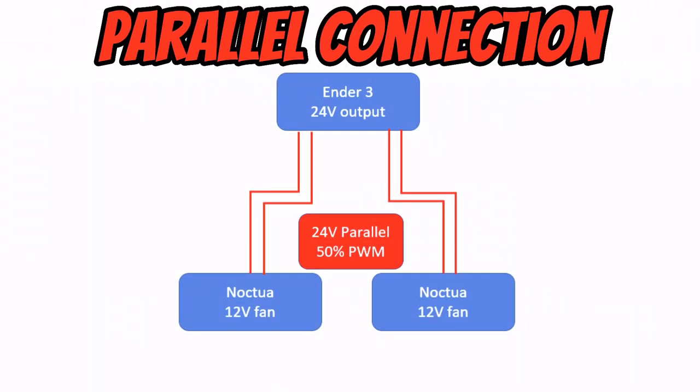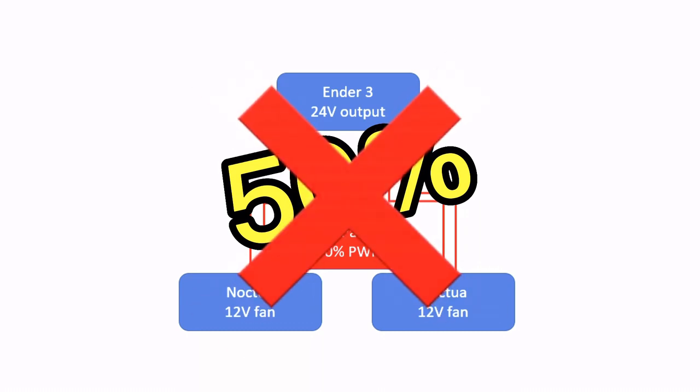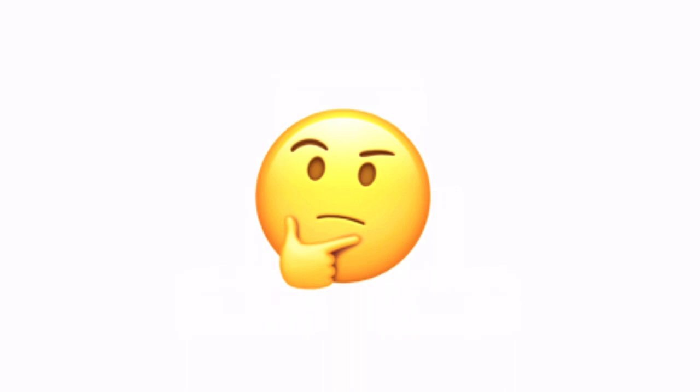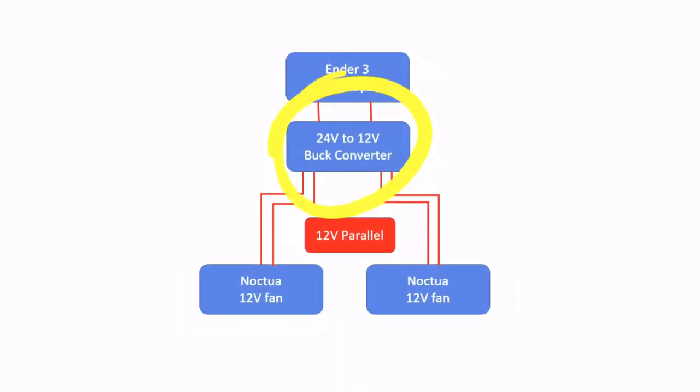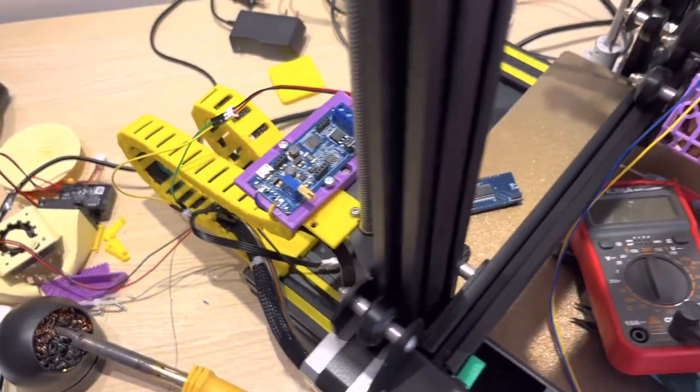I thought about trying to fix this by hooking the two fans in parallel and connecting them to the 3D printer, controlling them at 50 percent fan speed not to overload them. But then I realized even at 50 percent speed it would still be 24 volts, just at a 50 percent duty cycle from the PWM controller. Because I didn't want to damage the fans, I decided to hook up a DC converter to switch the voltage from 24 to 12 volts. But then I realized this was getting a little bit too complicated.